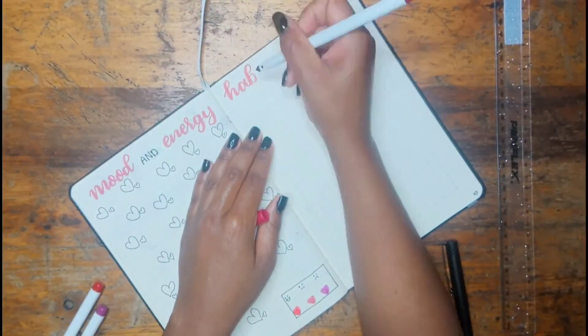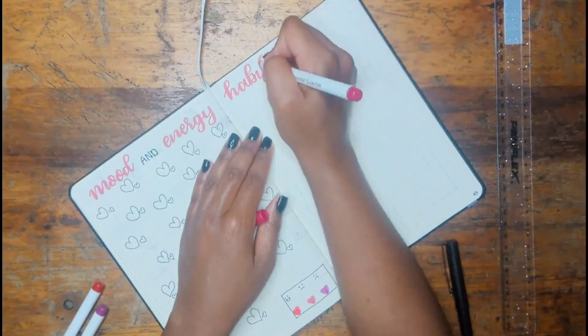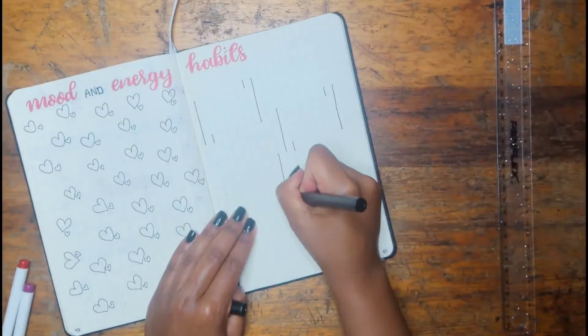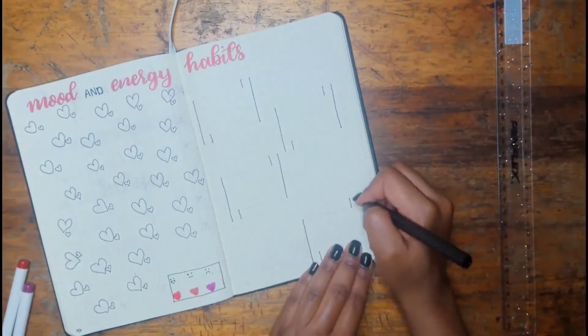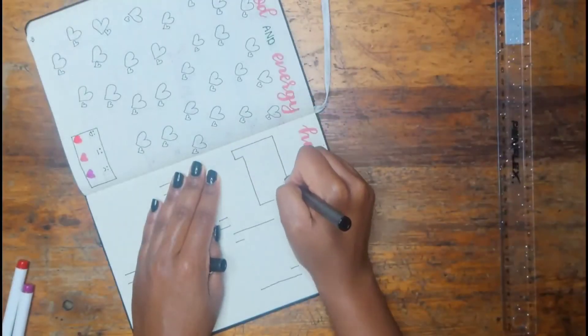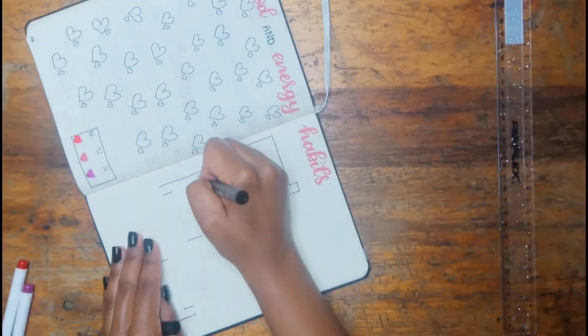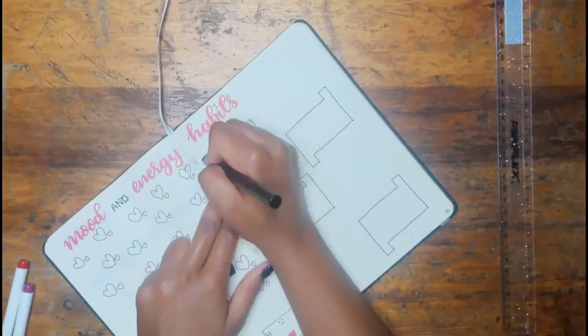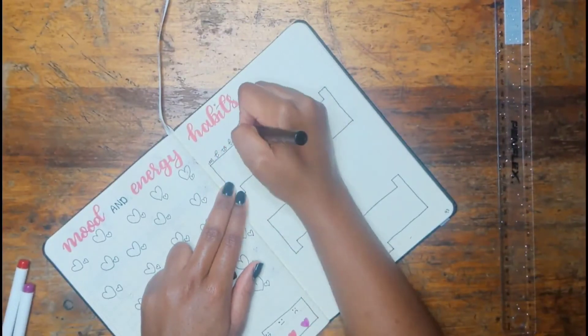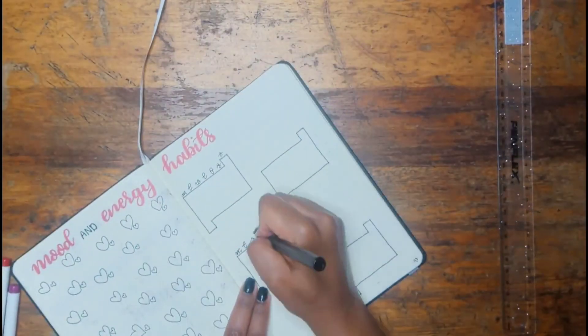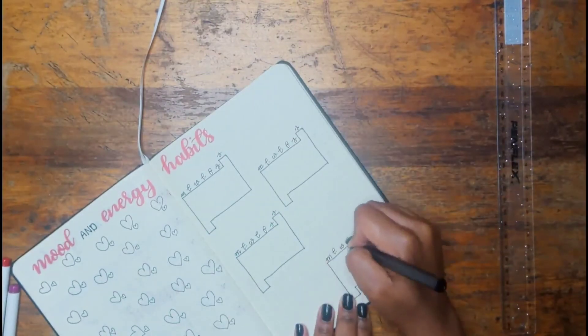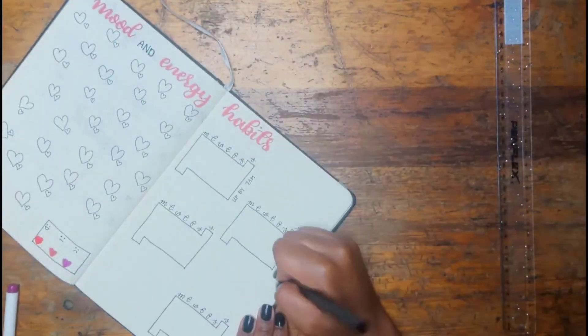Then I decided to do it with my mood tracker because mood and energy kind of go hand in hand, I guess. On the other side I did my habit tracker, but for this month I've been having five habits for the past I think three or four months but I haven't been keeping up with them as much as I wanted to.